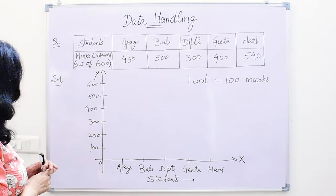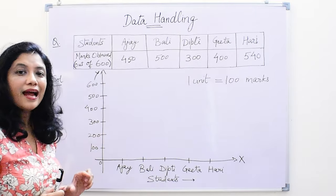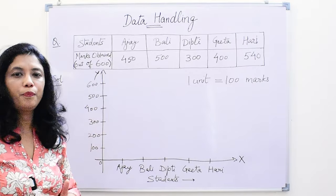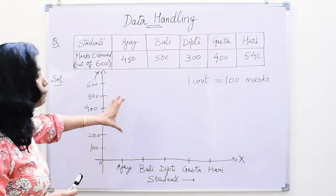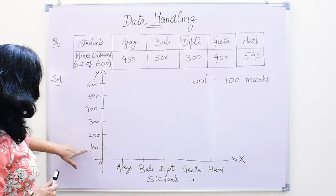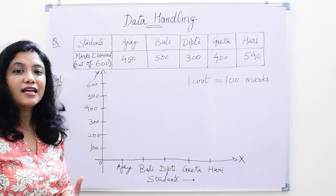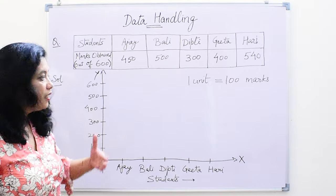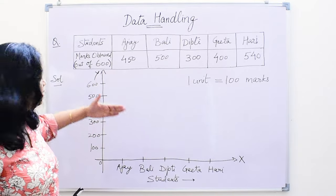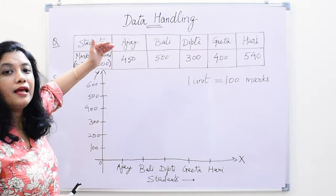We have to choose the unit so that the length of the scale is appropriate, so that the bars are not too long or too short. Here we are taking the unit as 100. If we take the unit as 10, it won't fit into our space — the length of the scale will exceed.